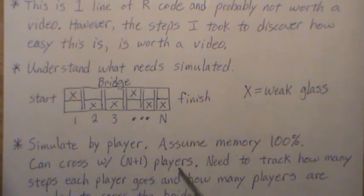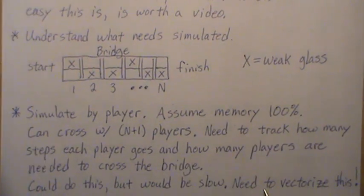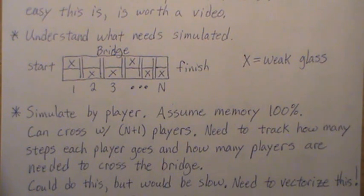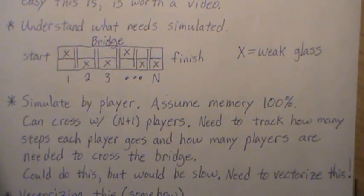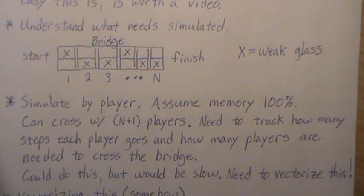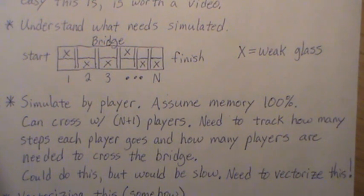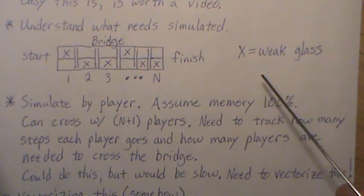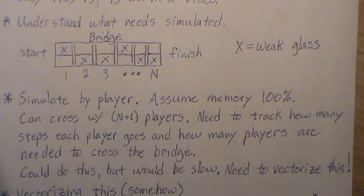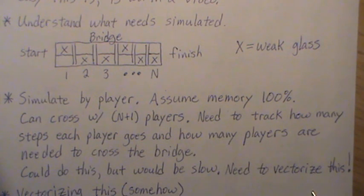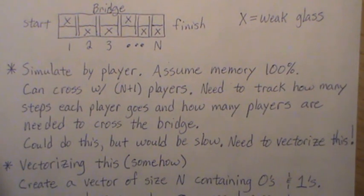The initial goal was to track how many steps each player goes and how many players are needed to cross the bridge. But in R, tracking all that information, while straightforward, would be incredibly slow because it's not vectorized — you're tracking one piece of information at a time, looping over several simulated games. So somehow I wanted to vectorize this, because vectors and matrices are fast in R.